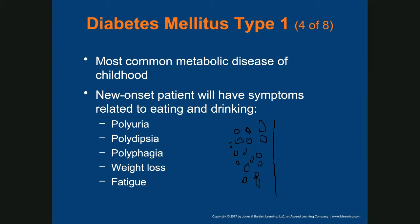With a high concentration of glucose in the blood compared to the cell, water is pulled out of the cell by osmosis. The cell starts to dehydrate or shrink. This is polydipsia — excessive thirst. The body also tries to get rid of excess glucose by increasing urine output.